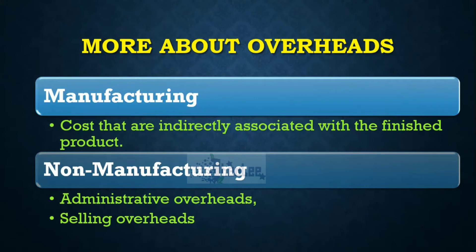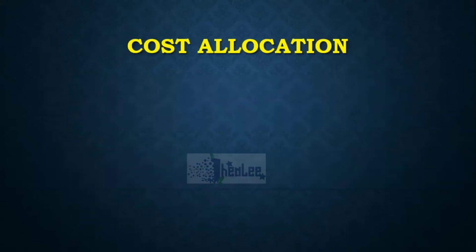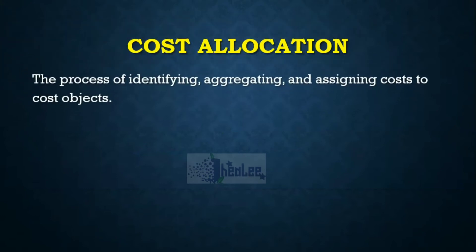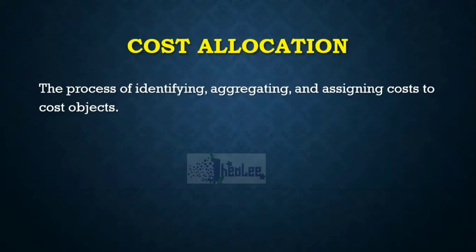When we look at overheads in a business, we have to look at cost allocation. Cost allocation is basically the process of identifying, aggregating, and assigning costs to cost objects. You produce an item or run a service, and you have to go through that process to ensure you assign the costs to the object so the business is able to generate a profit.